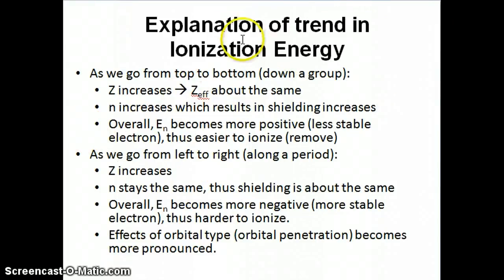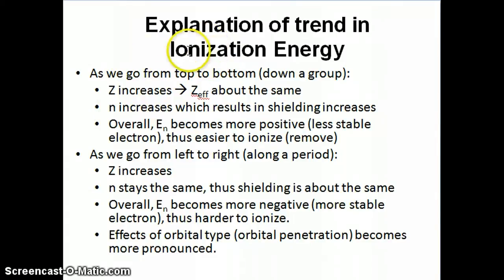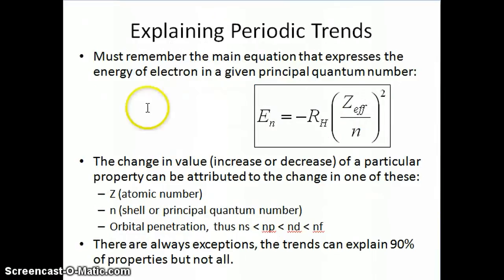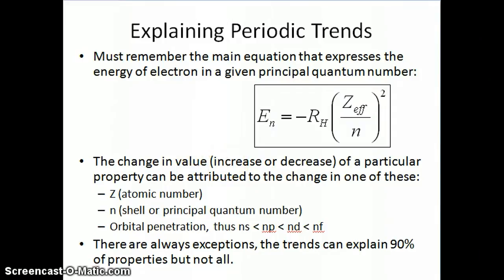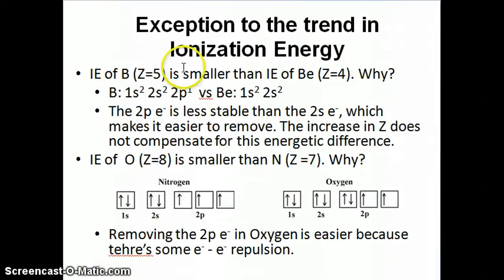Hi everyone. I want to continue talking about the trend in ionization energy. I spent quite a bit of time on it, and now I'm going to talk about the exceptions to the trend. The reason I spent so much time is because I want you to get the concept of explaining the trend and the exceptions, relying on our understanding of the equation for the binding energy of the electron to the nucleus — specifically Z effective and n. Right now we're going to go into the exceptions to the trend in ionization energy.